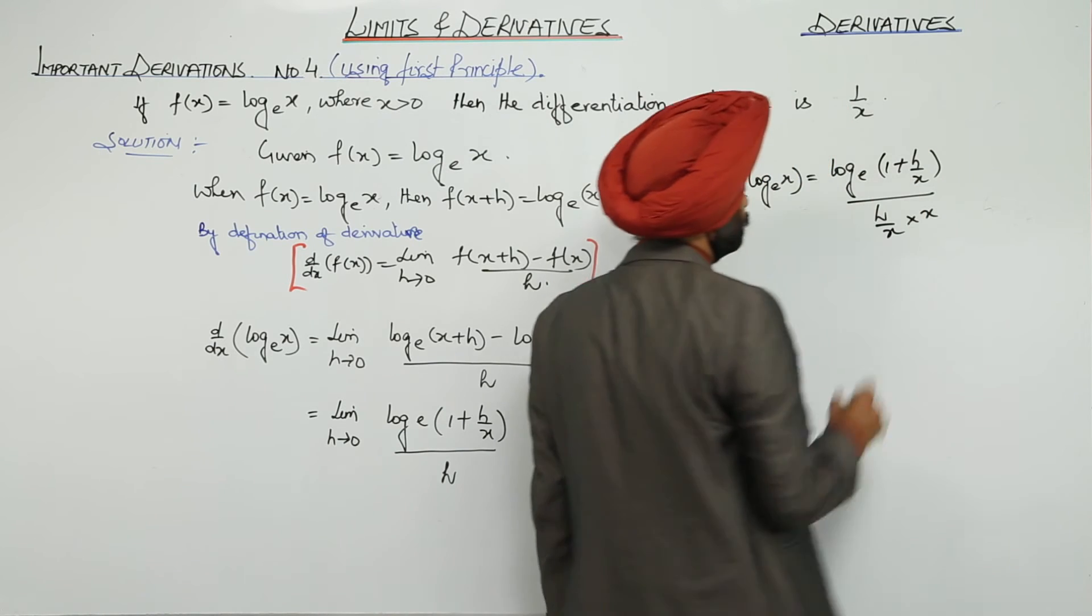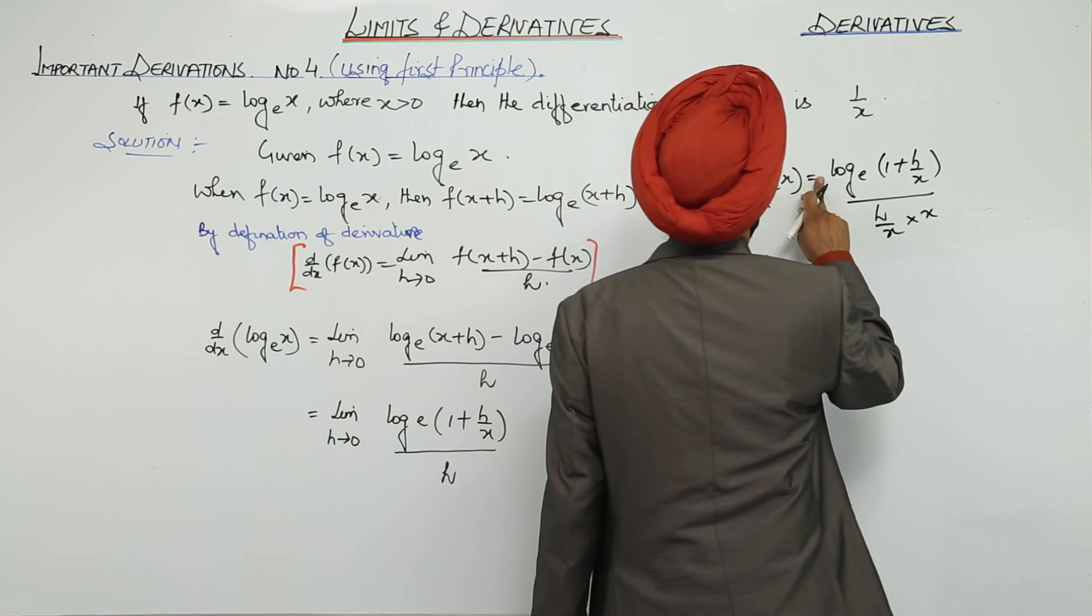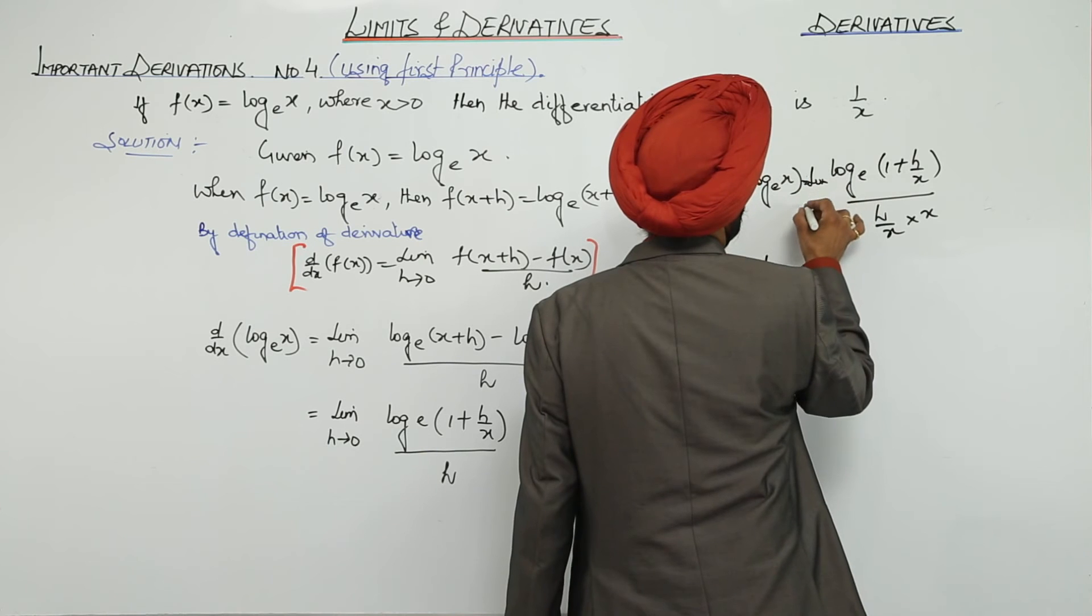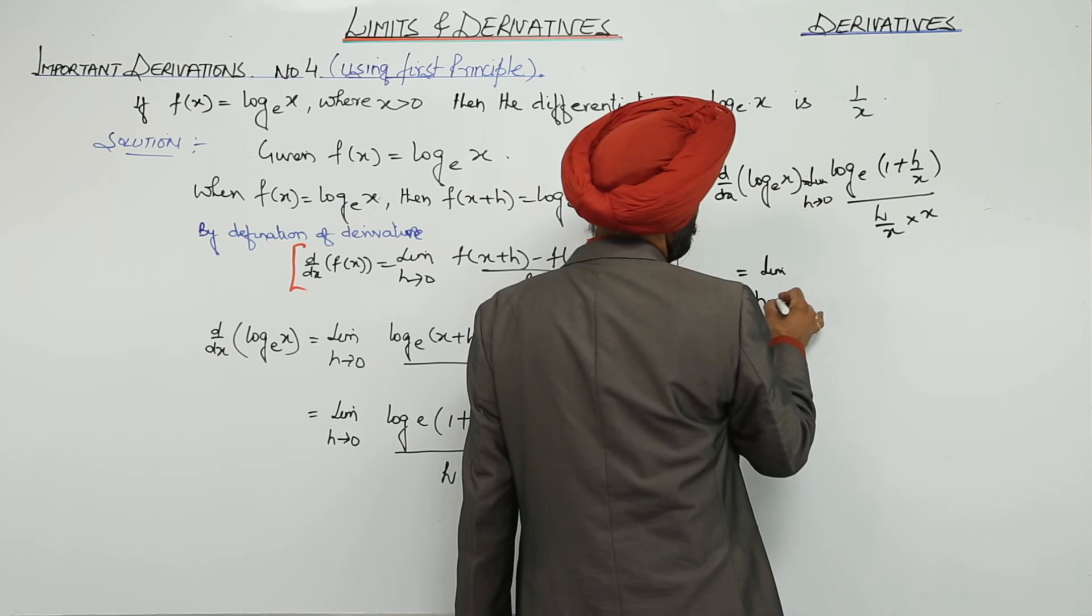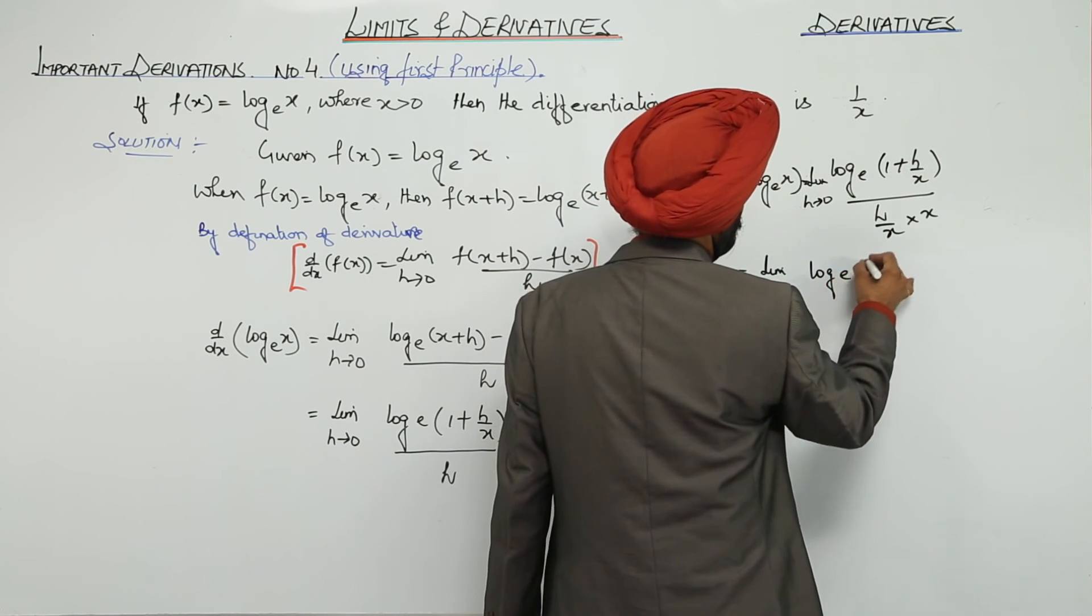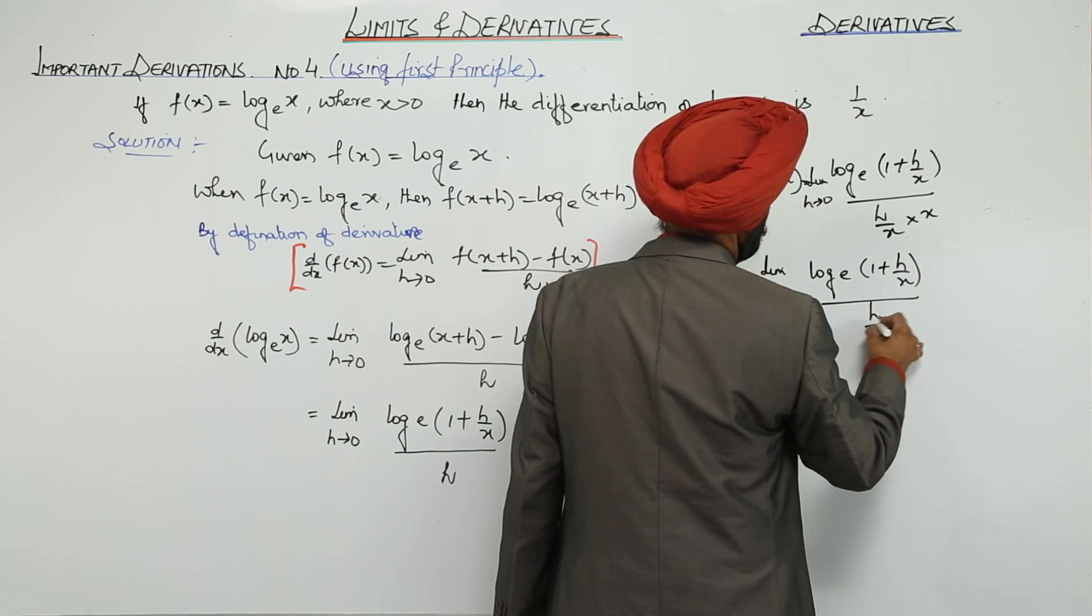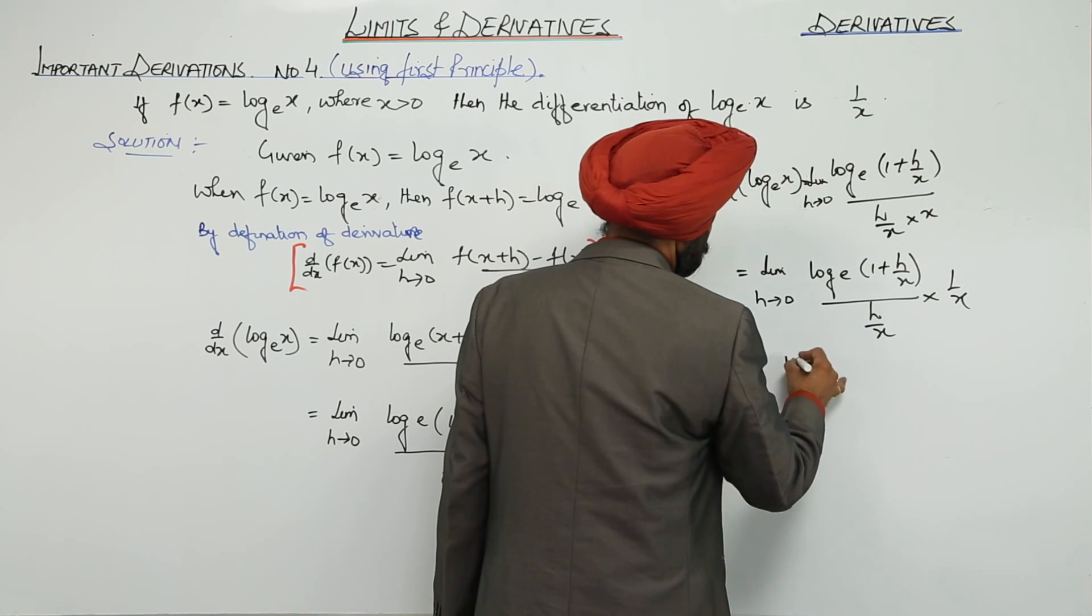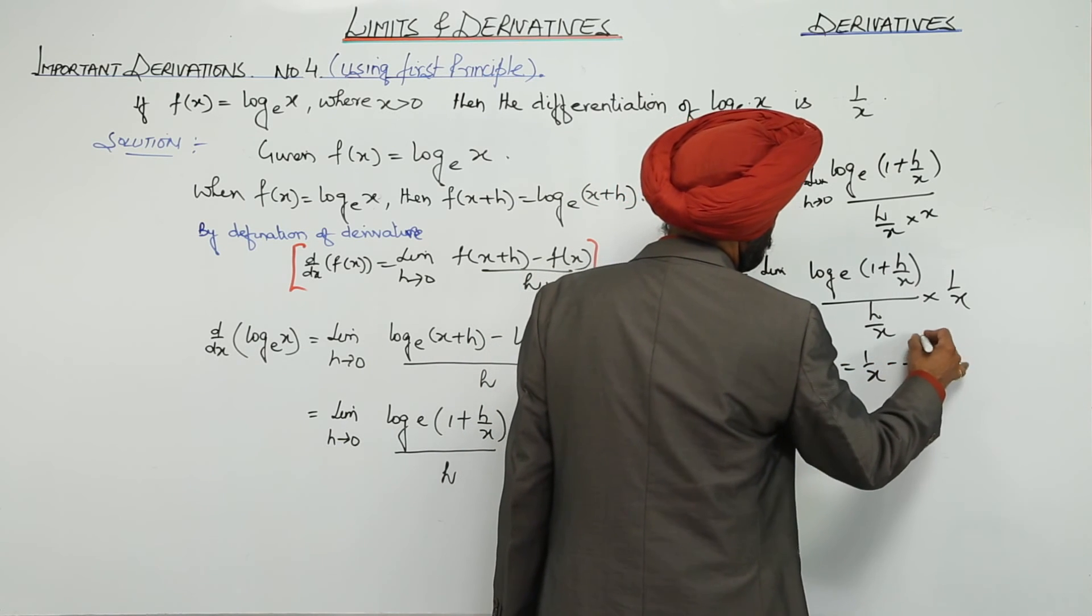Here we have to put the limits. Limit h approaches to 0, log e (1 plus h upon x) upon h upon x times 1 by x. Now, this is equal to 1 times 1 by x is equal to 1 by x.